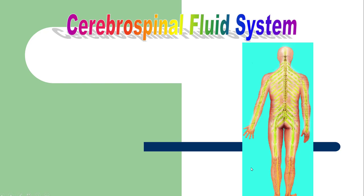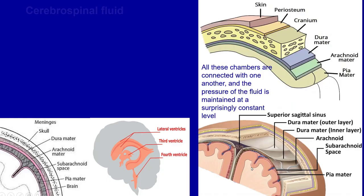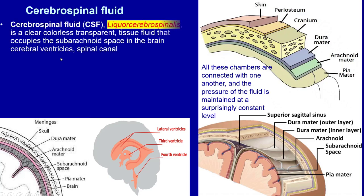Bismillahirrahmanirrahim. Today I'm going to discuss cerebrospinal fluid. Cerebrospinal fluid, also called CSF or liquor cerebrospinalis, is a clear, colorless, transparent tissue fluid that occupies the subarachnoid space in the brain.